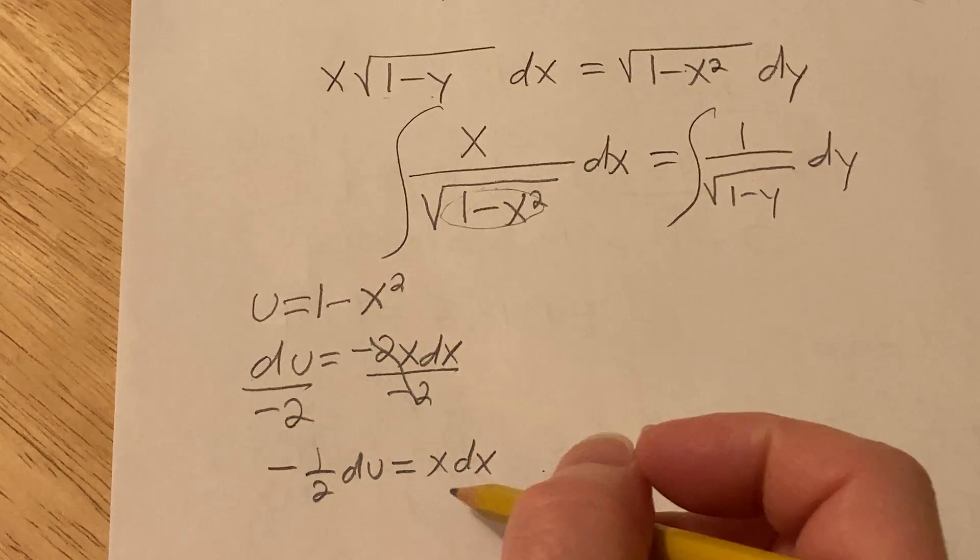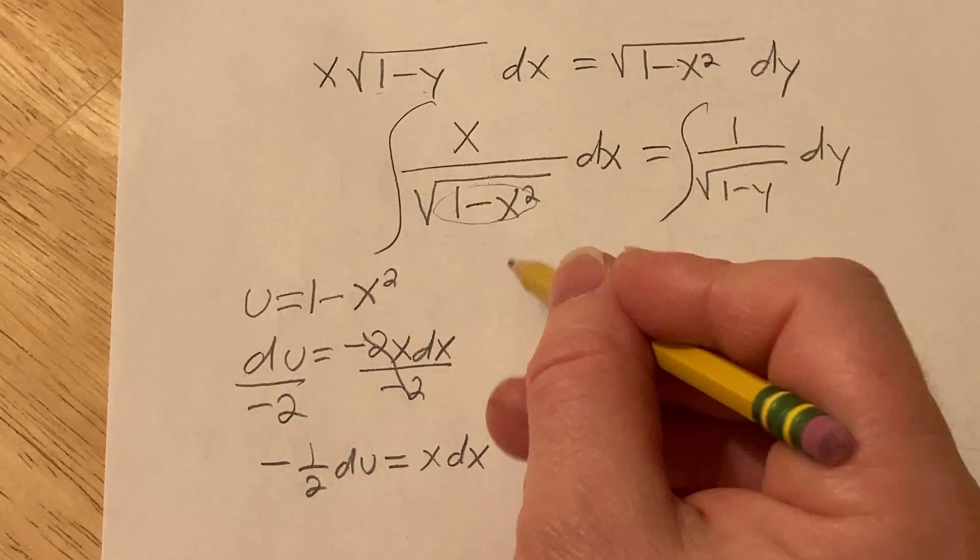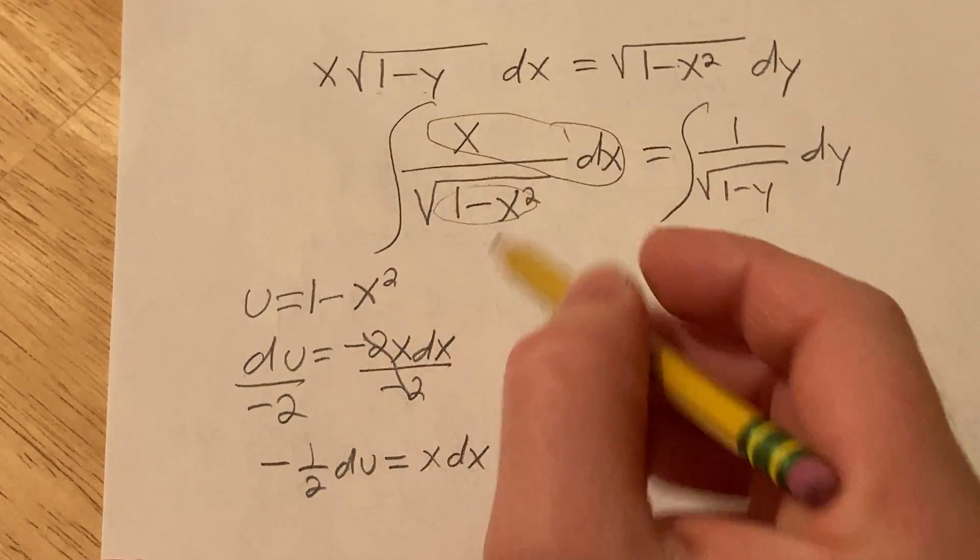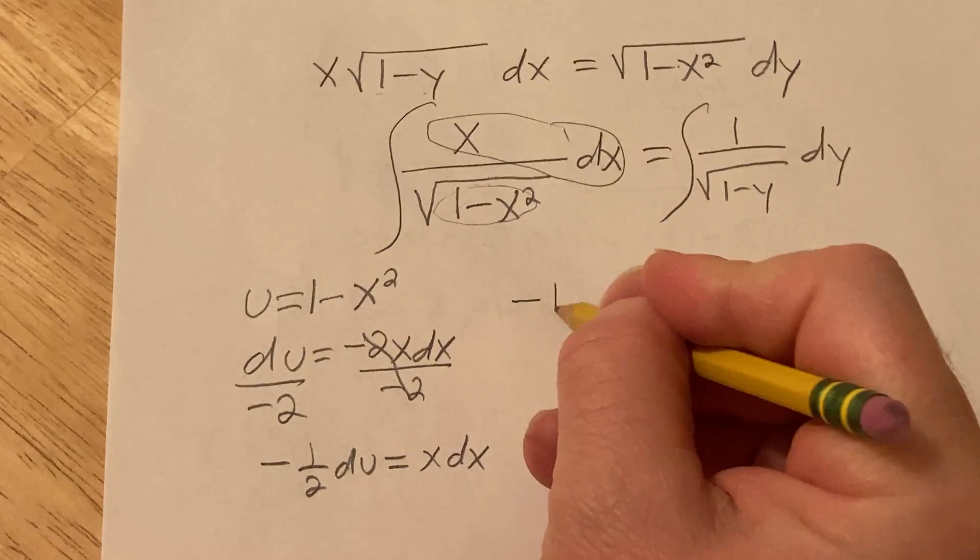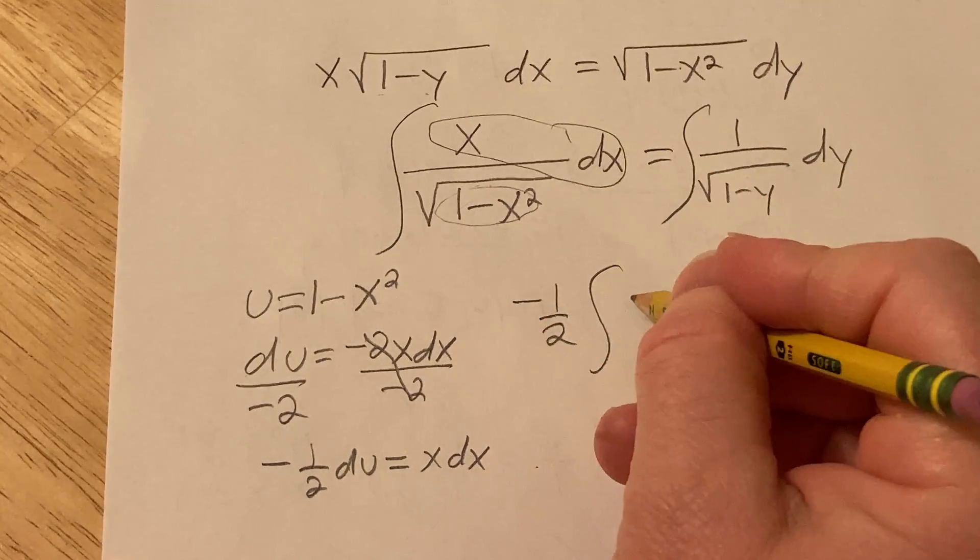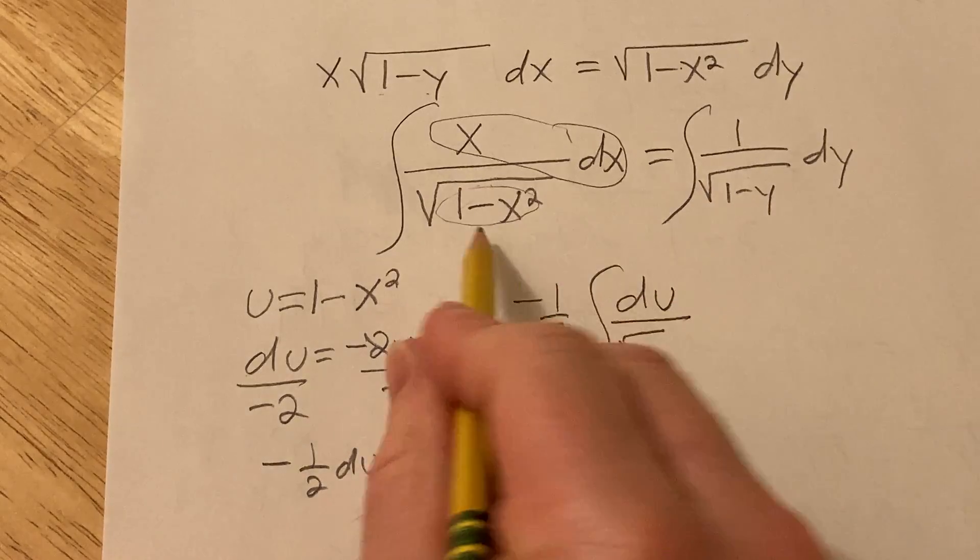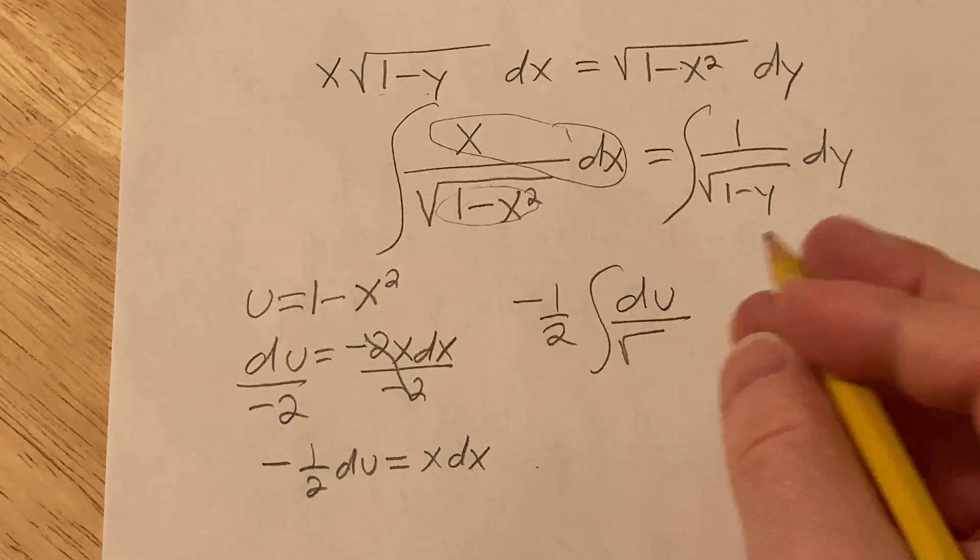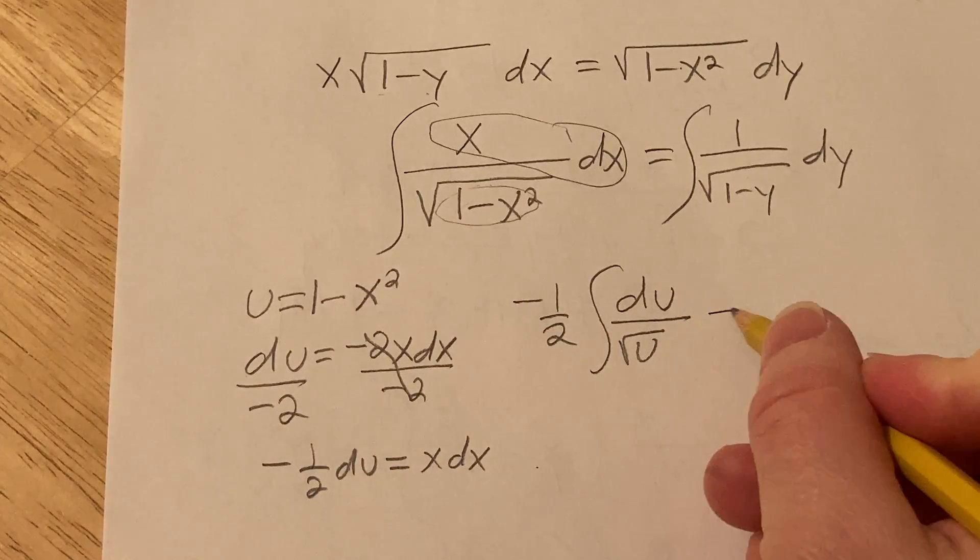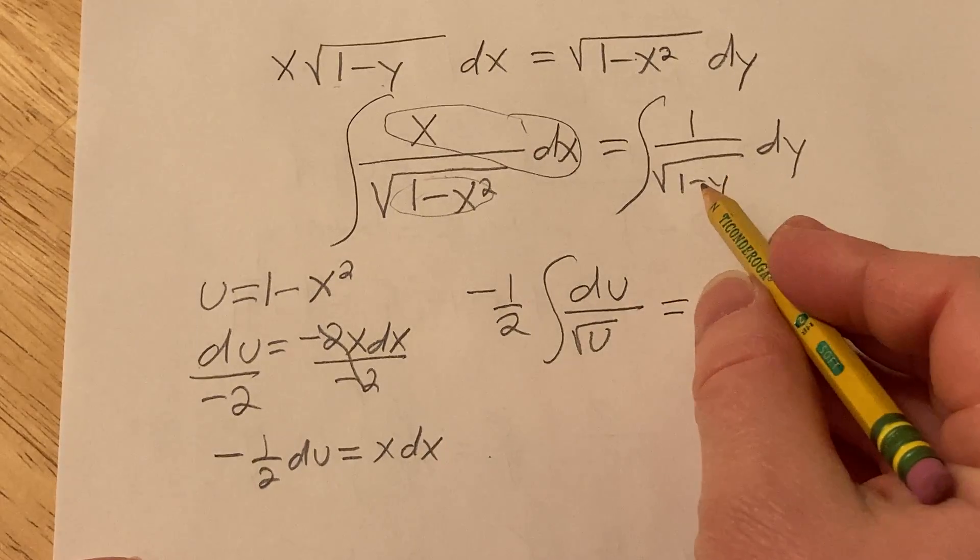Okay, so now we're ready to make the substitution on this one. So the x dx, that's going to be negative 1 half du. So I'll pull out the negative 1 half. Here we have a du. And then on the bottom, we just have the square root of, and we said that piece was u. So that's just going to be u. Equals.